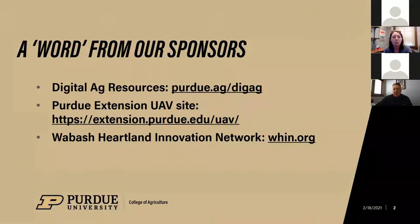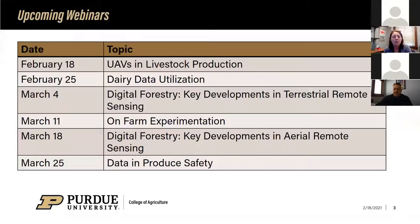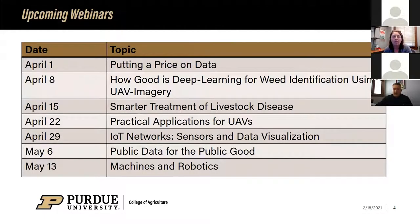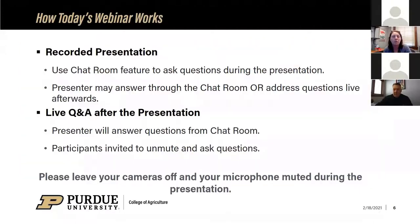The Wabash Heartland Innovation Network sponsors quite a bit of the work we showcase in this series. Coming up we stick with livestock for a couple of sessions, then jump into digital forestry, and through April and May you'll see those topics on our digital ag resources website. Today we have John Scott, who's going to talk about UAV use in livestock — covering sheep, cattle, forage management, and pasture management.